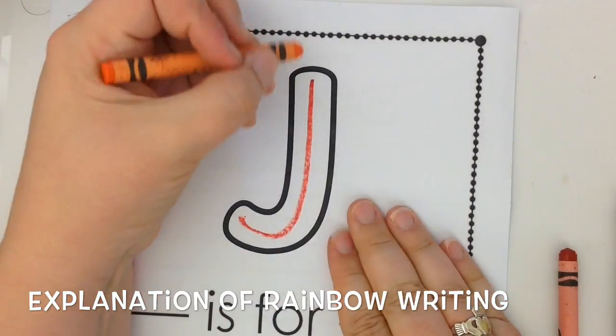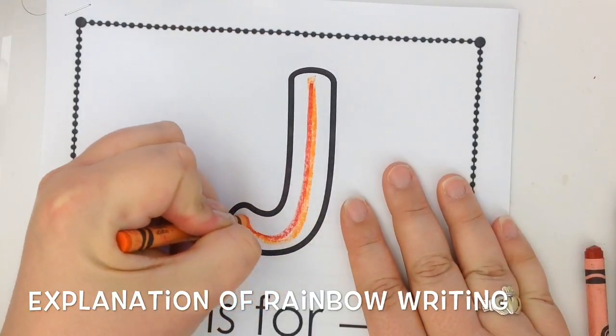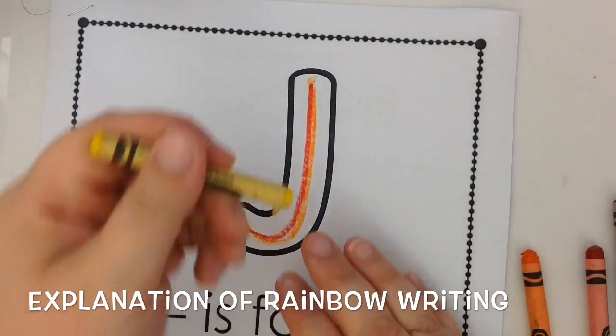Then I'm going to go back over that same J in orange. Now I'm going to use yellow.